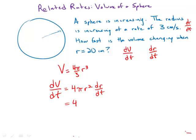Well we have 4, we have π, r is 20 so r squared is 400, dr/dt is 3, and so this is 12 times 400 that would be 4,800π.